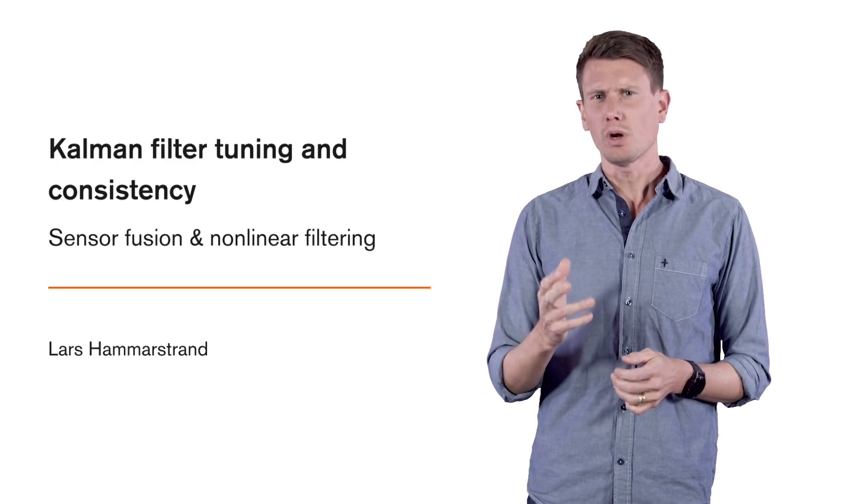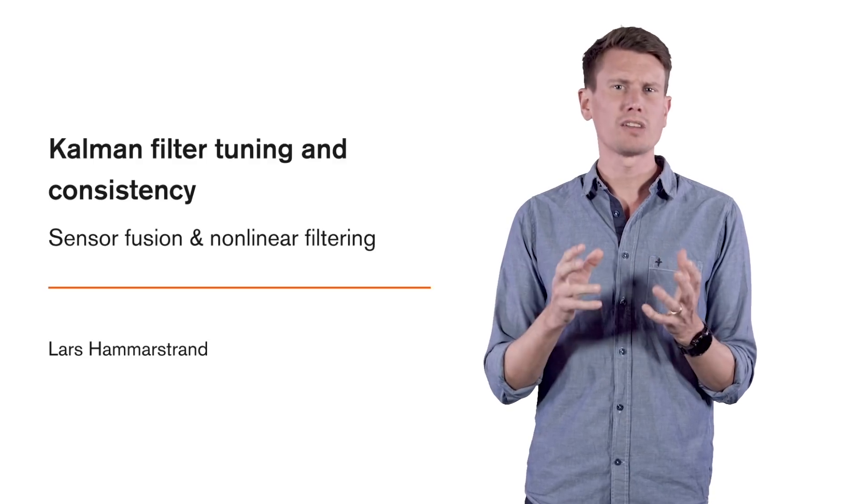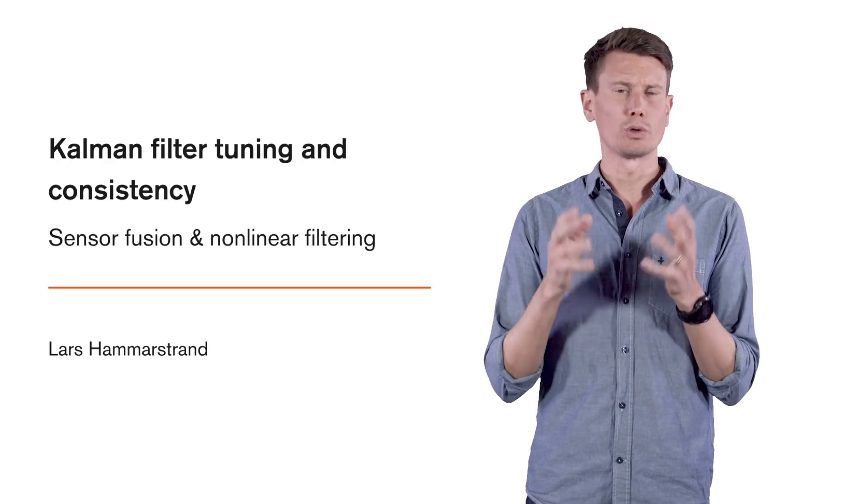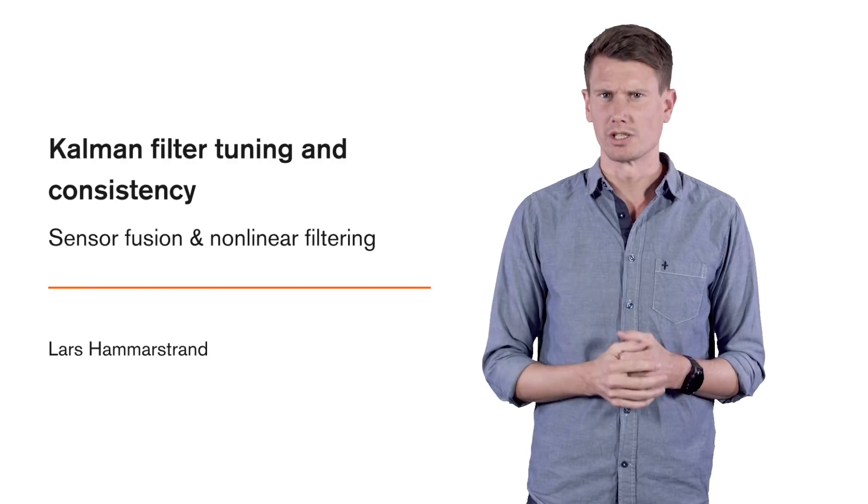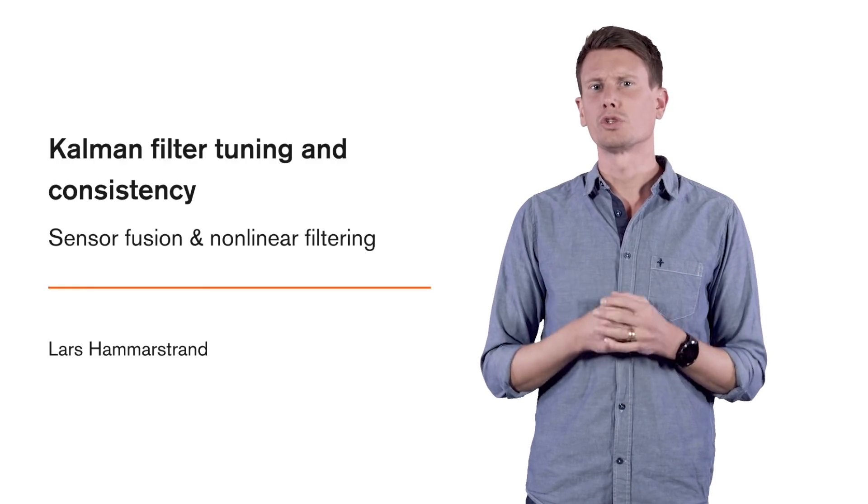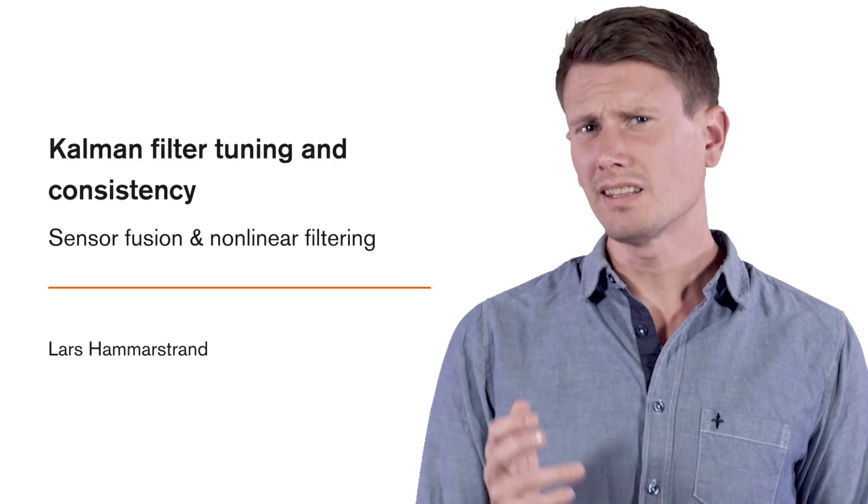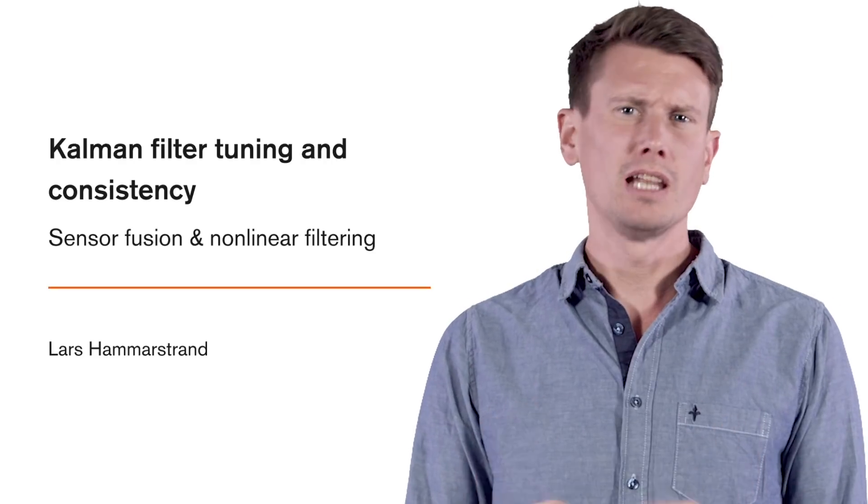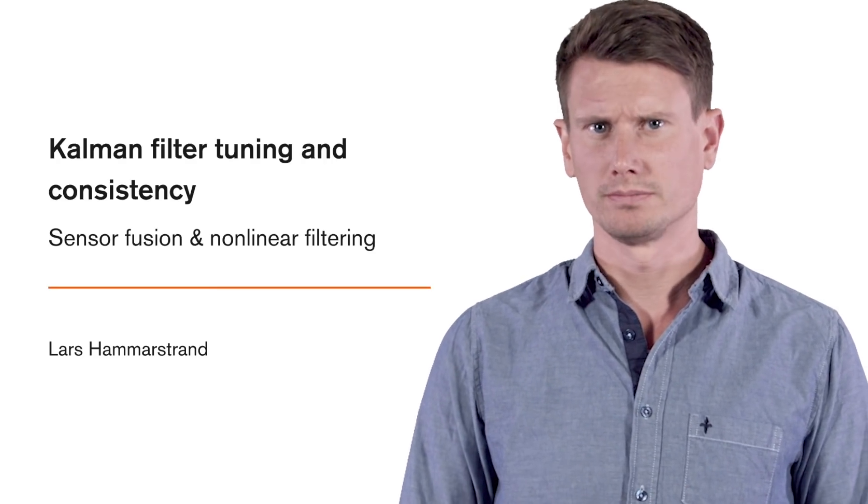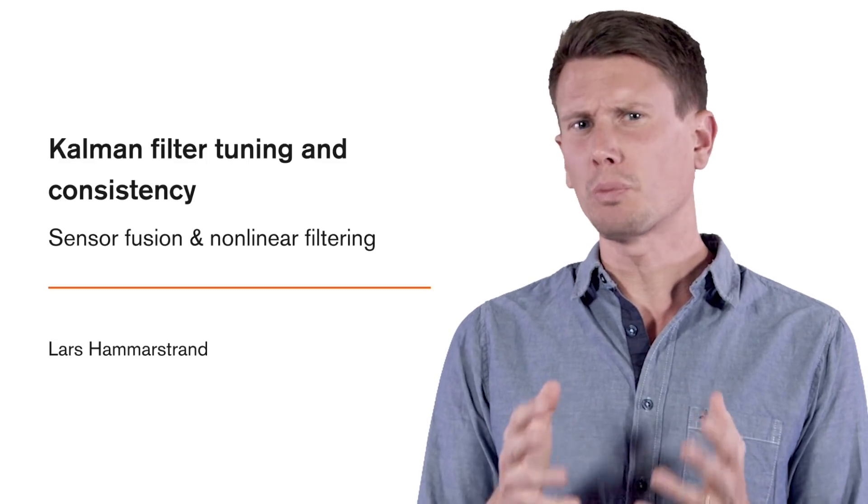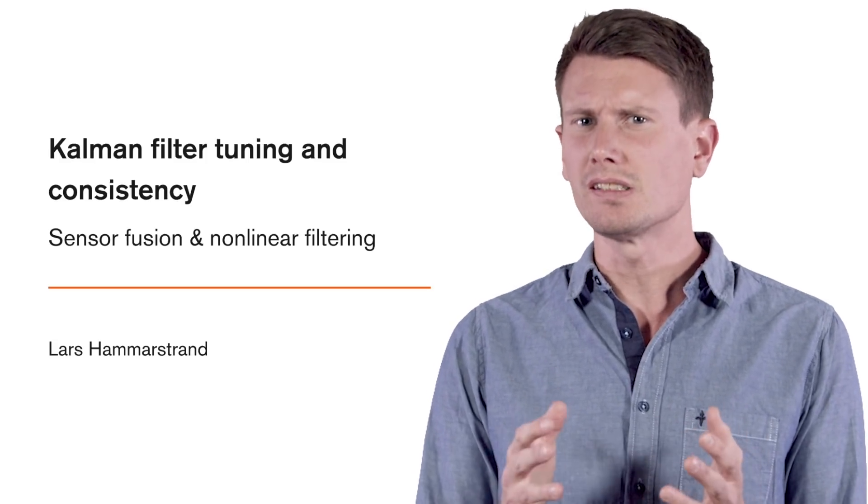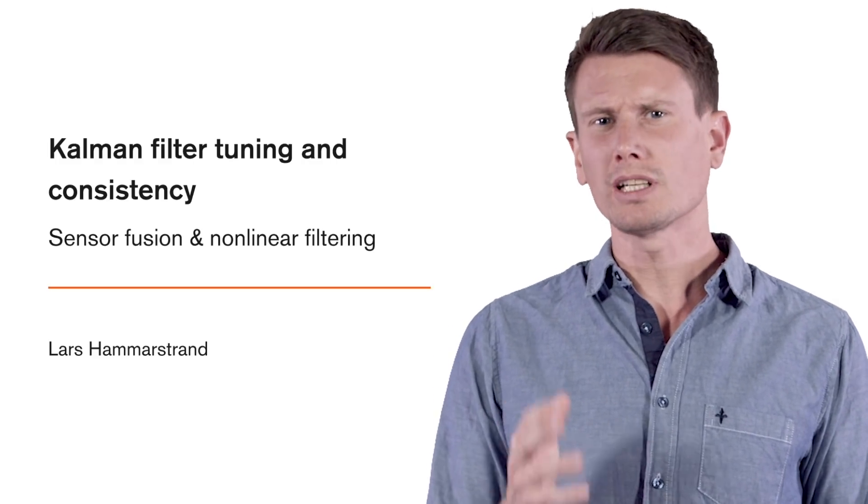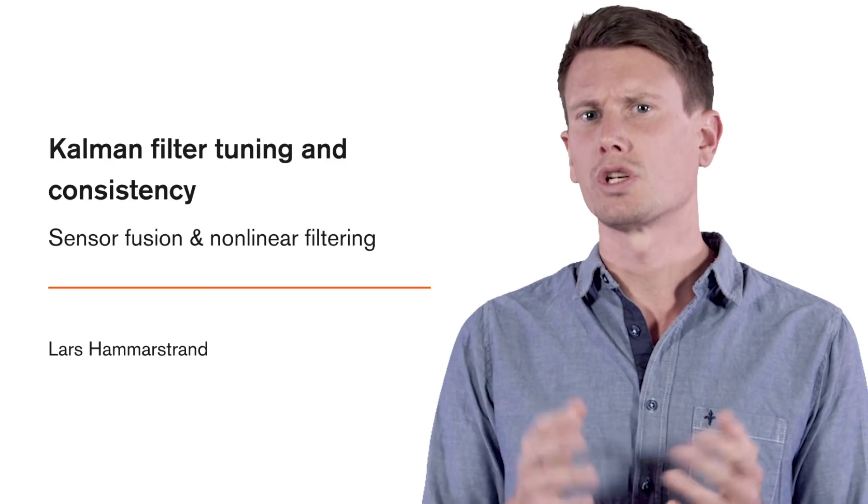So in this lecture, we're going to look at some tips and tricks, as well as some more formal methods for how we can do this. We will do this both when we have access to ground truth data, for example, if we're doing simulations, and when we do not know the true state sequence. We have divided this lecture into three parts. In the first part, we will give an introduction and look at the fundamental properties of the Kalman filter. In the second part, we will look closer at the properties of the innovation and how we can use these to assess the performance of our filter. In the last part, we will look at how to tune our filter by adjusting the motion and measurement model.